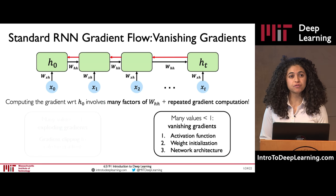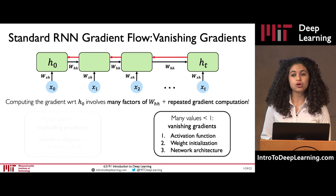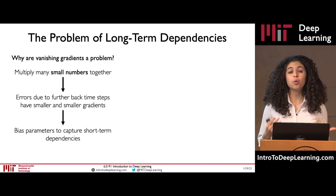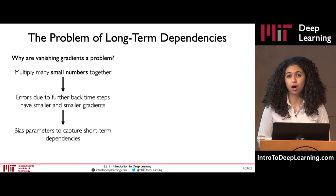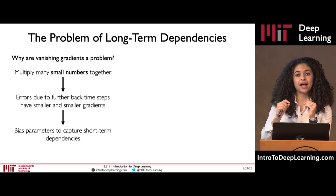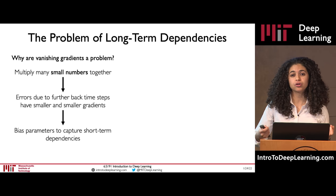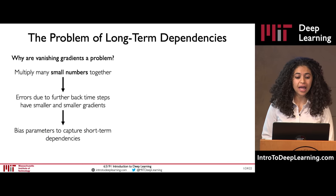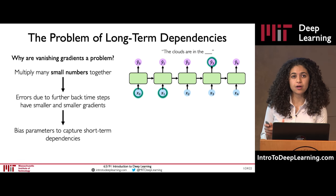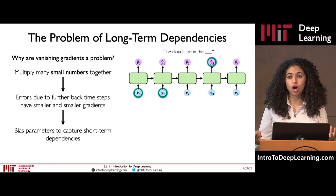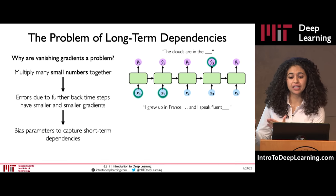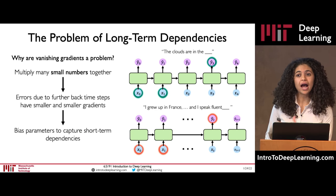We'll touch on three ways to mitigate the vanishing gradient problem in recurrent models: choosing our activation function, initializing the weights intelligently, and designing our network architecture. The reason vanishing gradients can be so problematic is that they can completely sabotage our goal of modeling long-term dependencies. By multiplying many small numbers together, this effectively biases the model to preferentially focus on short-term dependencies and ignore long-term dependencies. While this may be okay for simple sentences like 'the clouds are in the blank,' it really breaks down in longer sequences where information from earlier in the sequence is very important for making a prediction later on.